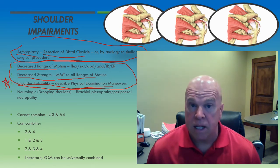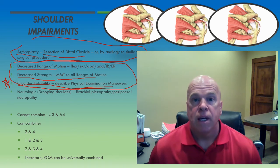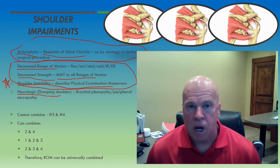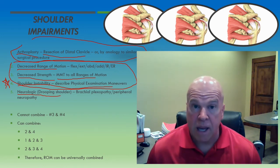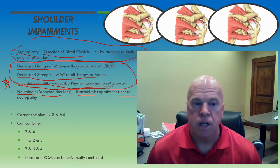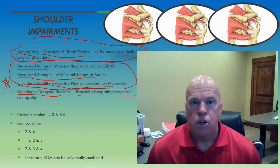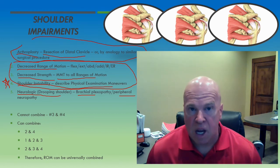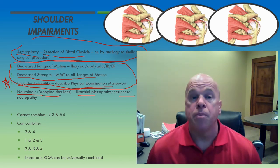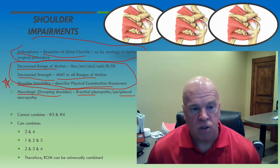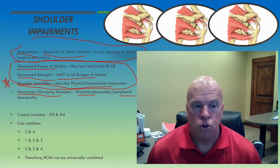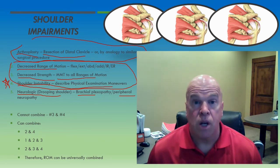Finally, a little-used impairment of the shoulder that you may occasionally encounter has to do with nerve injury — neurologic injury to structures in and around the shoulder. For example, I recently had an examinee who had a winged scapula, and the winged scapula affected the function of the shoulder due to a neurologic condition versus an orthopedic condition within the shoulder tendons themselves.